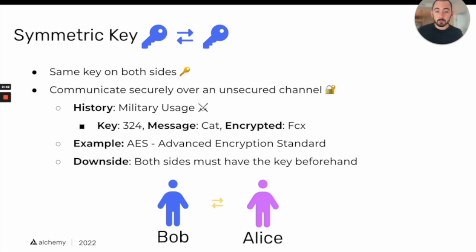So if Bob and Alice want to communicate securely, maybe they met up beforehand, exchanged keys, and now have the same keys on both ends — and they can use those keys to communicate securely over a protocol they're concerned might have eavesdroppers.